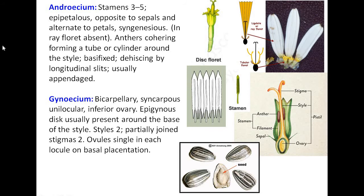Androecium: stamens 3 to 5, epipetalous — epipetalous means position of stamens on petals. Syngenesious in disc florets — syngenesious means stamens forming a tube-like structure. Stamens are absent in ray florets. Anthers form a tube or cylinder around the style. Anthers are basifixed, dehiscing by longitudinal slits, and with a terminal appendage.